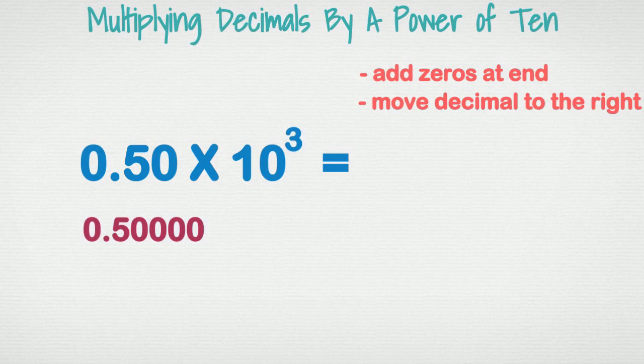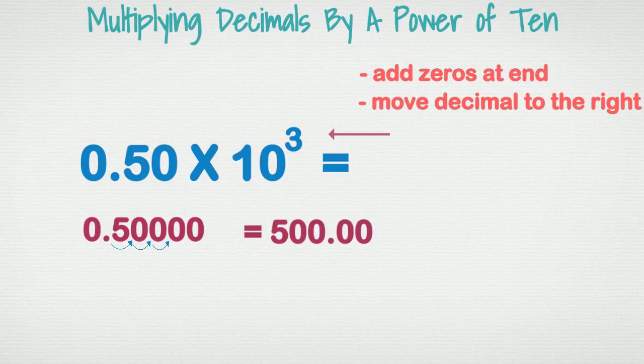The second step: we have to move the decimal to the right the same number of times as our exponent. Our exponent was three, so we should move the decimal to the right one, two, three places. After we move the decimal to the right three spaces, our answer is 500.